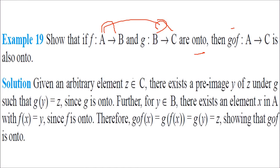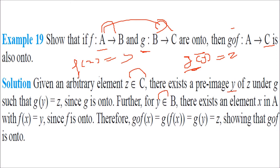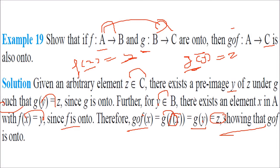Show that if f: A → B and g: B → C are both onto, then gof: A → C is also onto. Take any arbitrary element z in C. Since g is onto, there exists y in B such that g(y) = z. Since f is onto, there exists x in A such that f(x) = y. Then gof(x) = g(f(x)) = g(y) = z. So gof is onto.